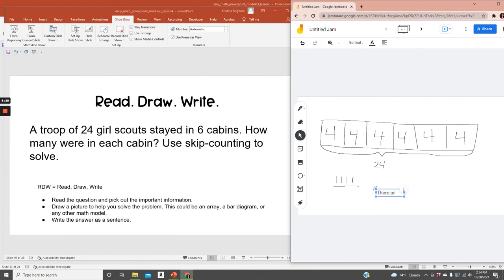There are four Girl Scouts in each cabin because 24 divided by six equals four. I used skip counting to solve the division equation.